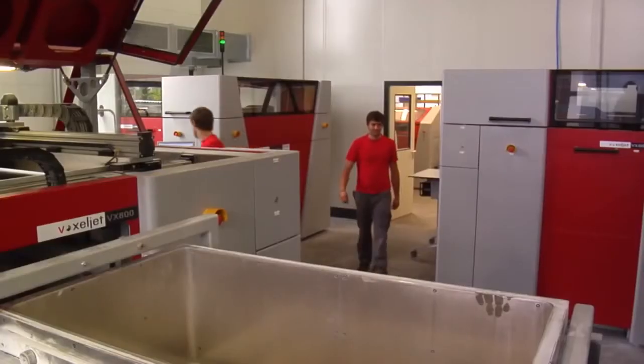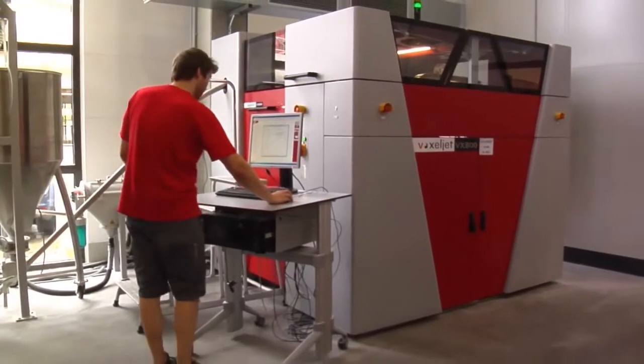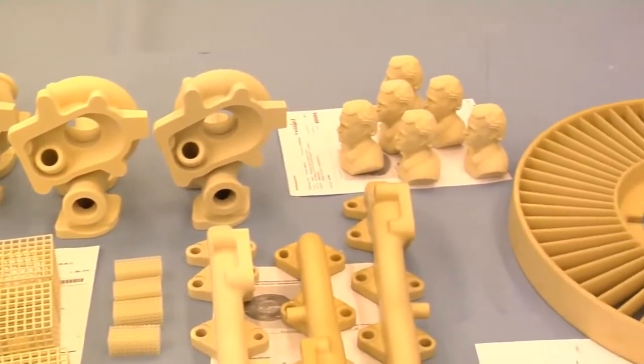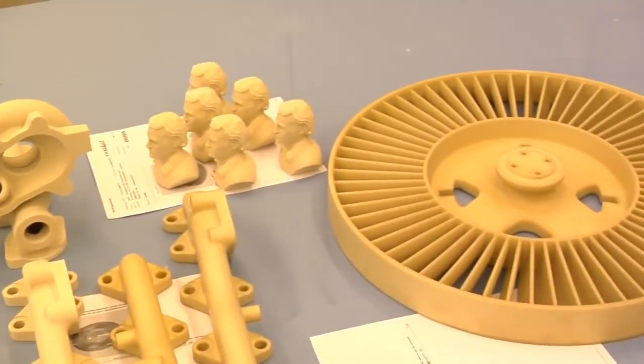Voxeljet can manufacture complex plastic parts using a 3D printing process. It consists of a powder-based process that can be used to create investment casting and illustrative models measuring up to 1060 by 600 by 500 millimeters. When your CAD data is received, it is checked and prepared for the process.